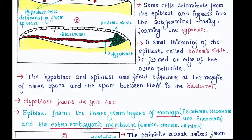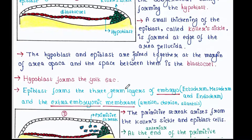The hypoblast forms the yolk sac. The epiblast forms the three germ layers of the embryo — ectoderm, mesoderm, and endoderm — as well as the extraembryonic membranes: amnion, chorion, and allantois.